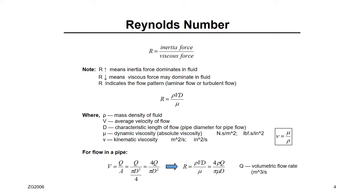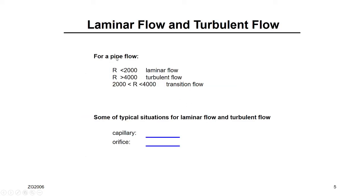Reynolds number — remember this from fluid mechanics. Reynolds number is the inertia force of the fluid flow inside the pipe over the viscous force. When you have a high Reynolds number, inertia force is dominant. If you have a low Reynolds number, the viscosity of the fluid is dominant. We are interested in Reynolds number because from it you can define what kind of flow exists inside the pipe.